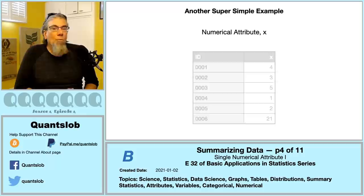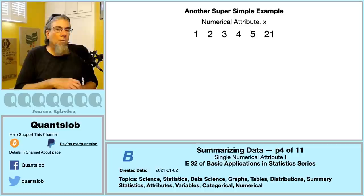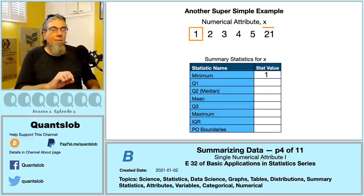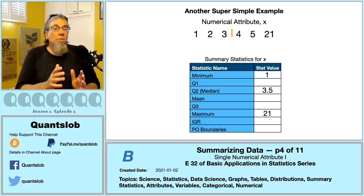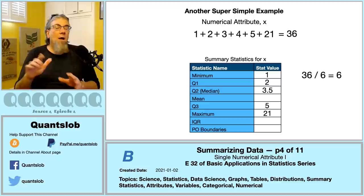We'll run through this again with a slight modification — adding a sixth value, 21. The minimum is still 1, but the maximum is now 21. For Q2 we now have an even number of observations, so we take the average of the two centermost. When we split at the median, the middle of the lower half is 2 (Q1) and the middle of the upper half is 5 (Q3). For the arithmetic mean, the values sum to 36 and 36 ÷ 6 = 6.